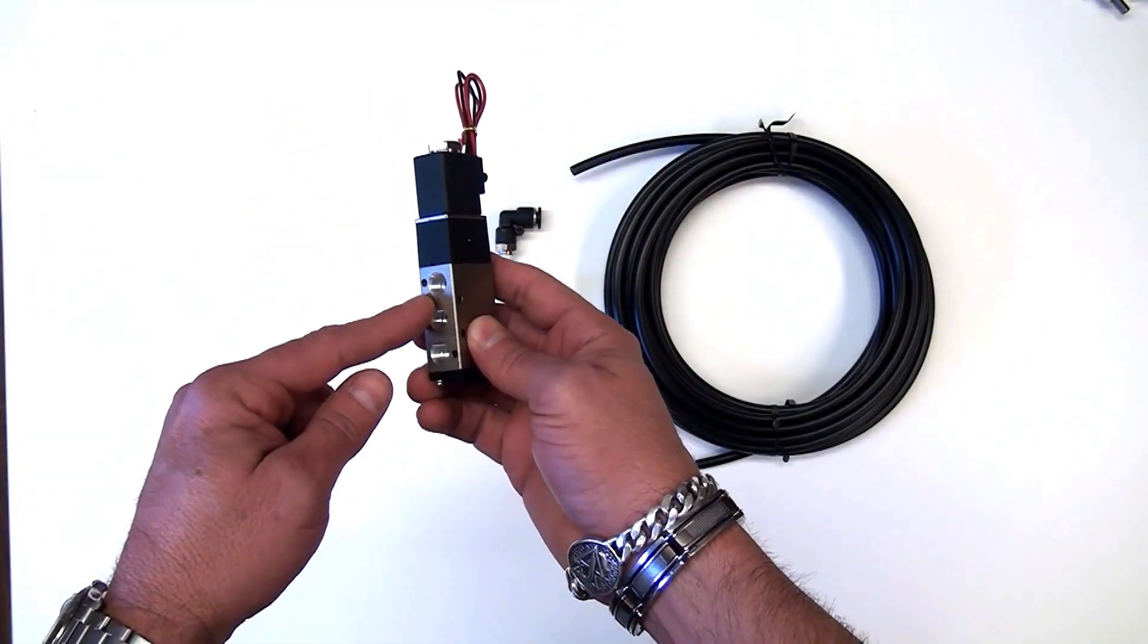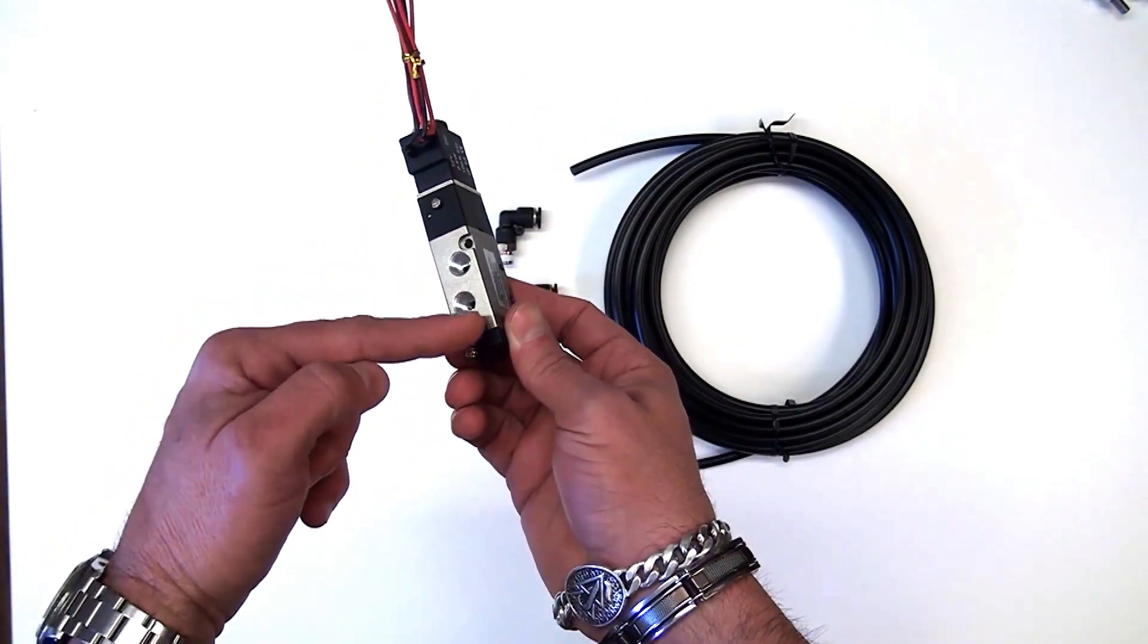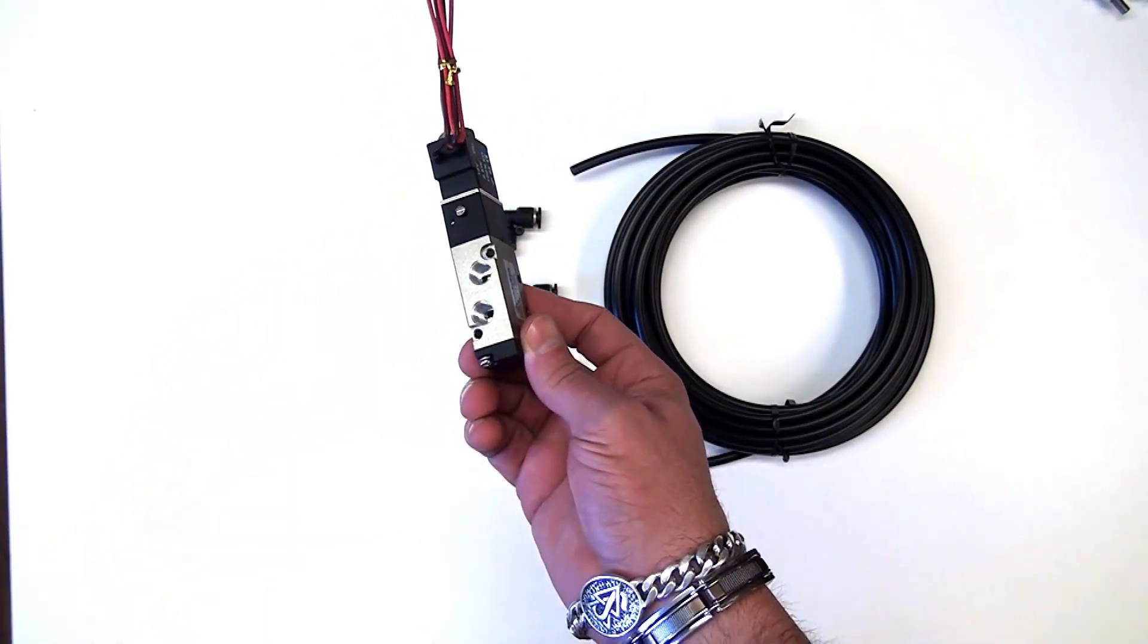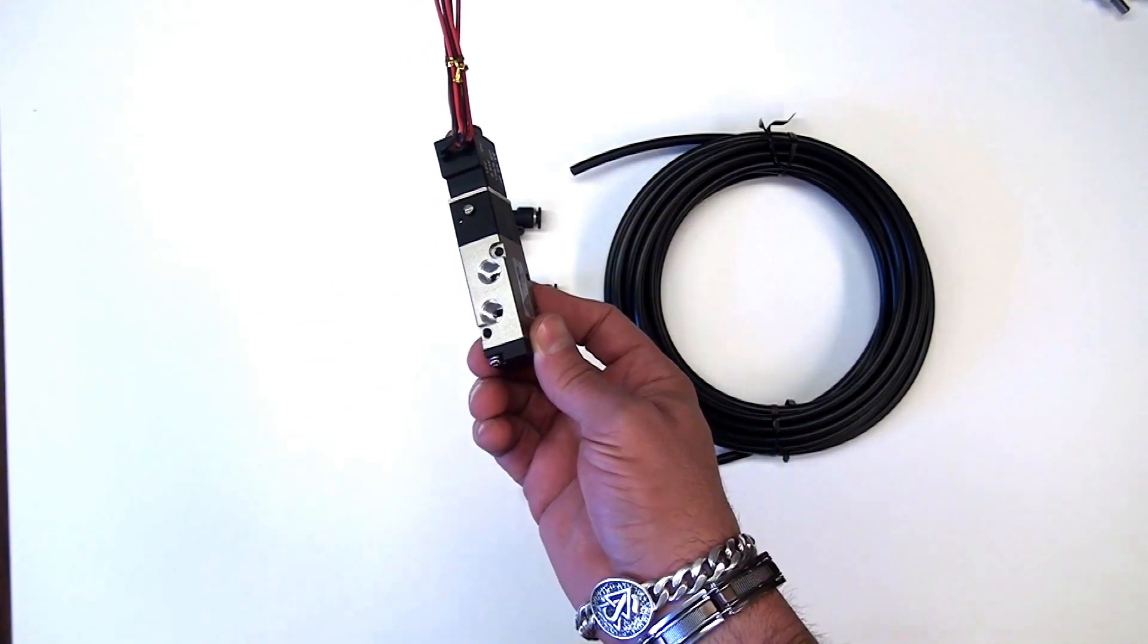Air comes in from your compressor, and it goes out to one of these two ports depending on whether the solenoid is activated or deactivated. It'll flip-flop.